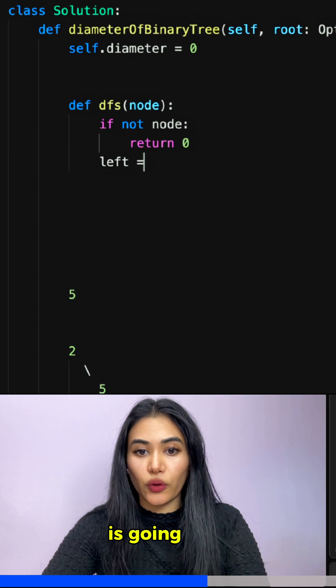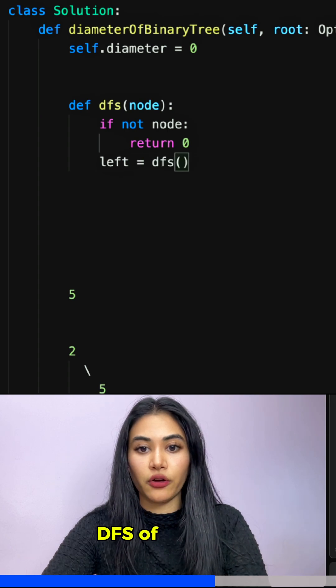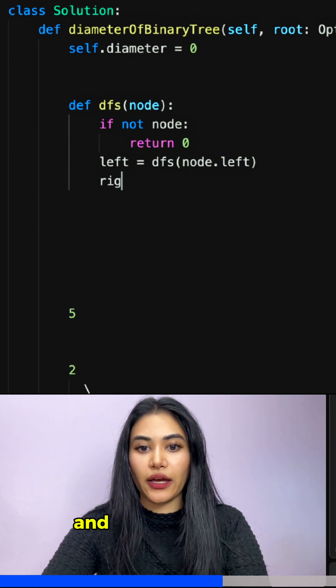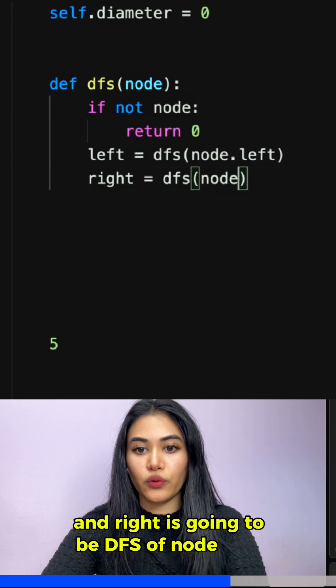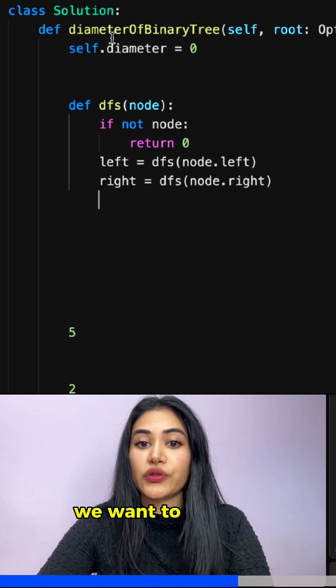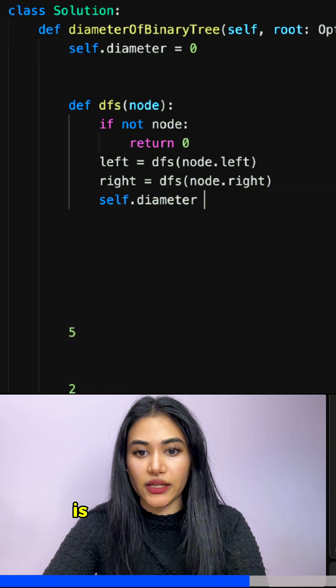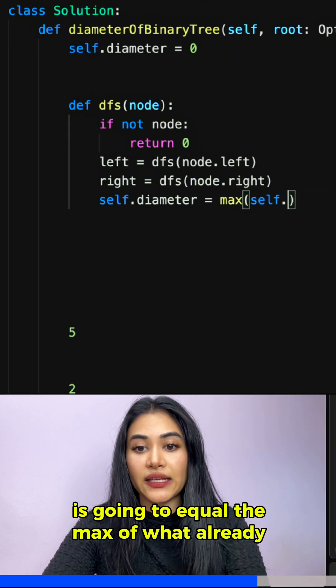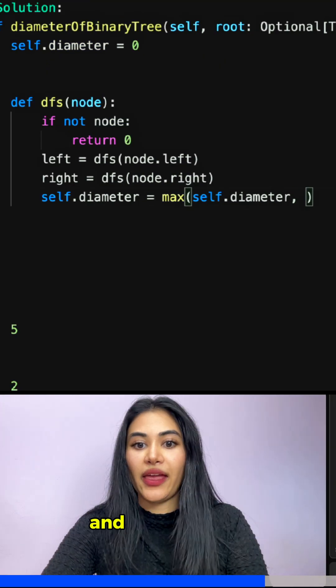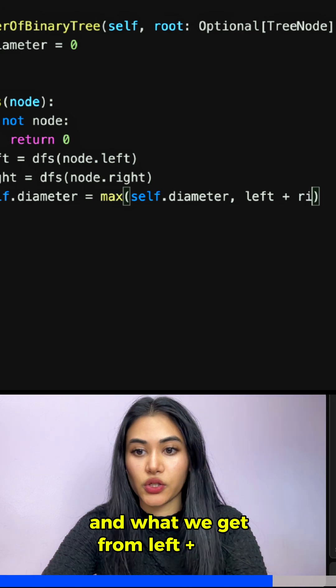Left is going to be DFS of node.left, and right is going to be DFS of node.right. We want to see if we need to update self.diameter, so self.diameter is going to equal the max of what already is in that variable and what we get from left plus right.